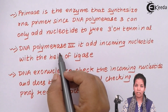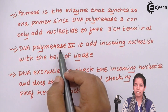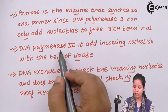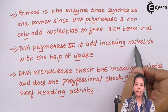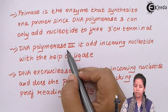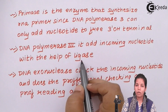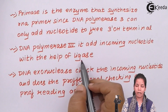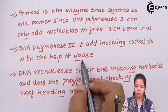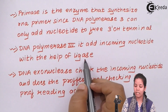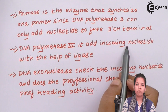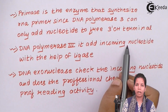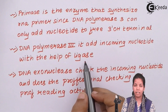The next enzyme in DNA replication is DNA polymerase 3, which adds incoming nucleotides — A, T, G, and C — to the single-stranded DNA. To stick one nucleotide to another, you need a biological glue, and this biological glue is ligases. So along with ligases and the nucleotides, DNA polymerase 3 fills up the chain and forms a double-stranded DNA.